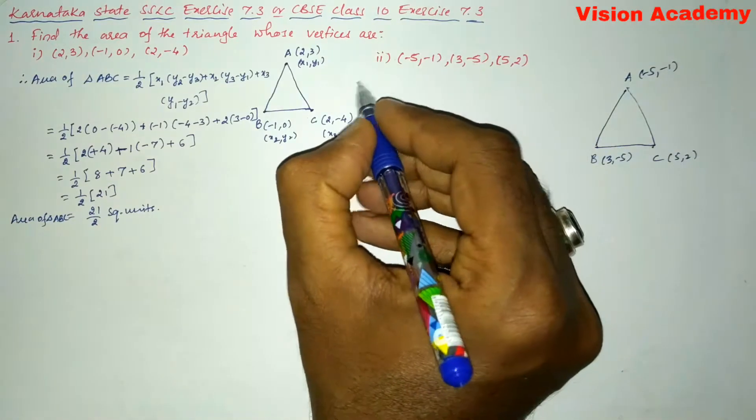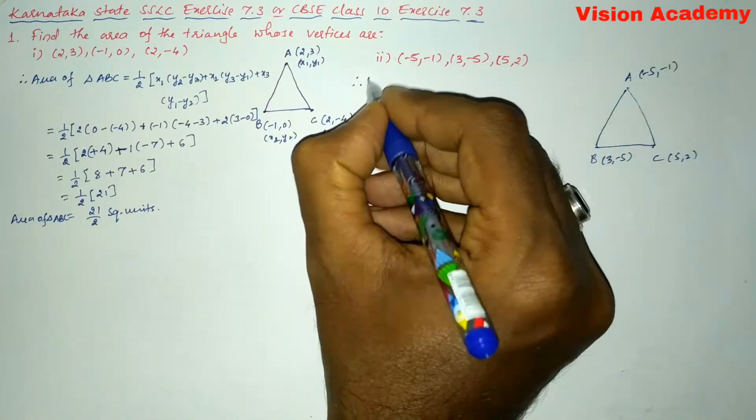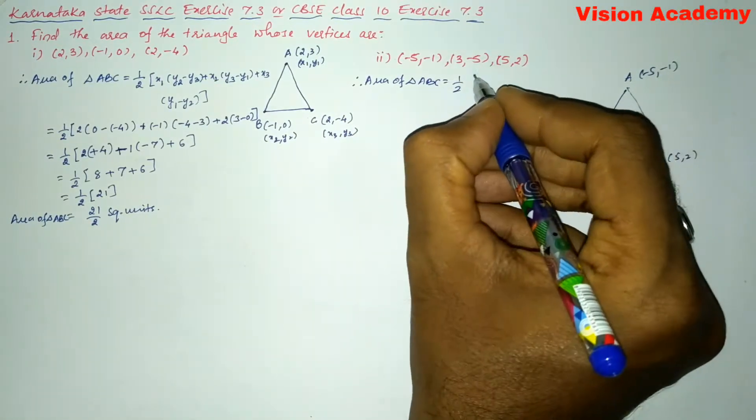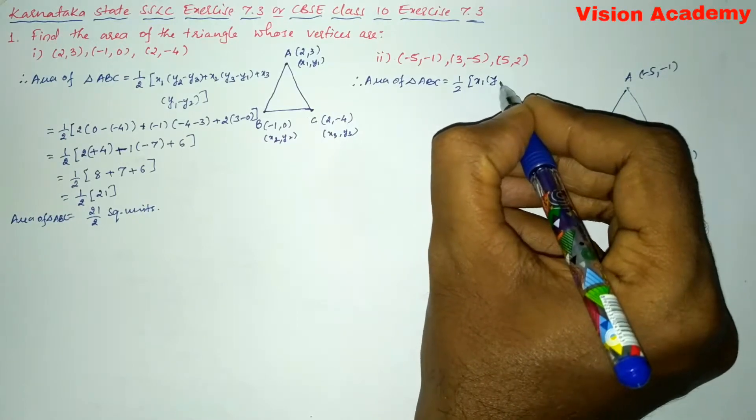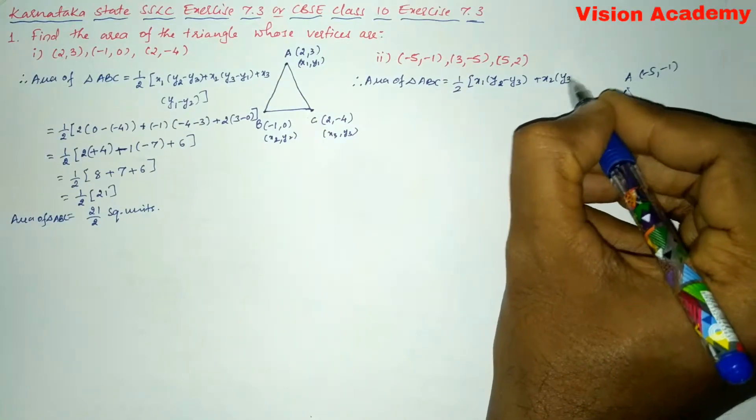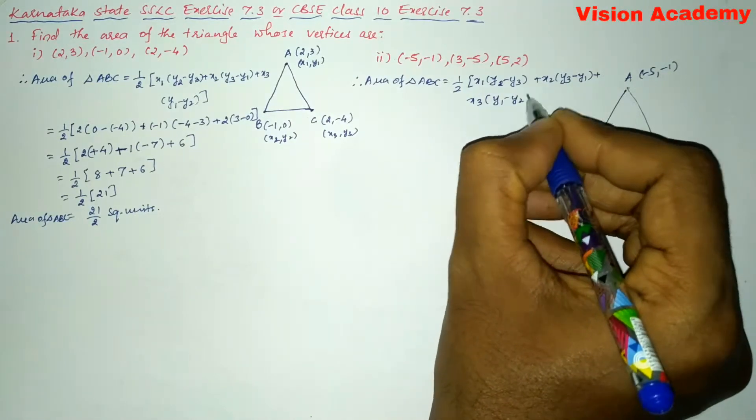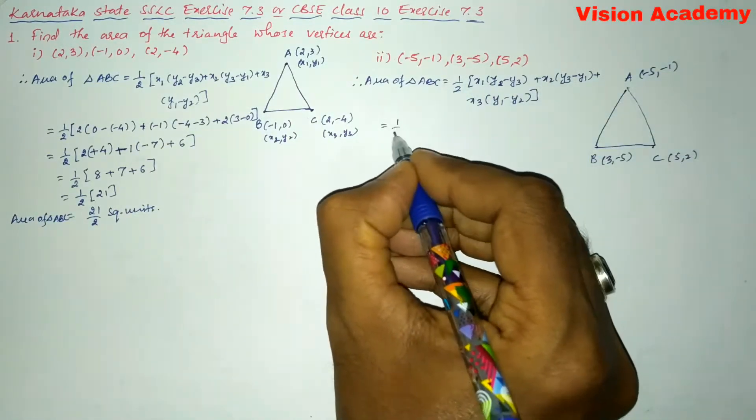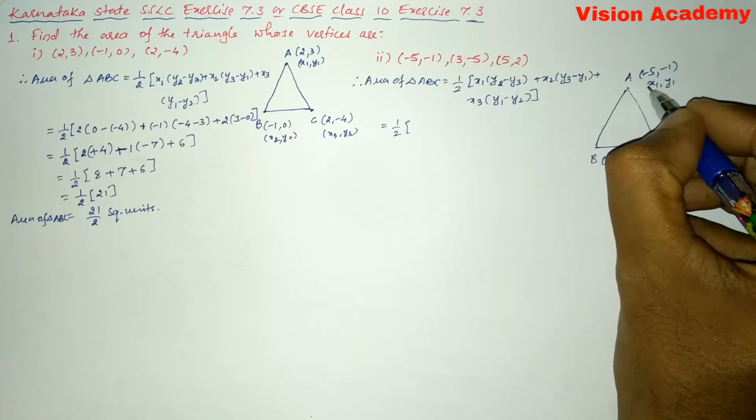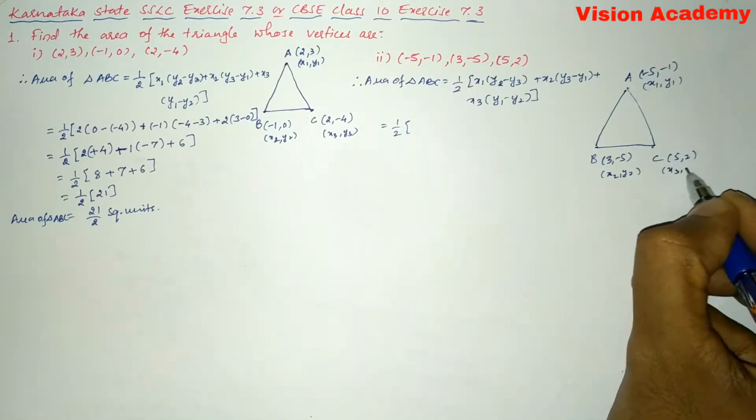Now we know how to find area of a triangle when the coordinates are given. So therefore we can write area of triangle ABC is equal to 1/2 into [x1(y2-y3) + x2(y3-y1) + x3(y1-y2)]. Now let us substitute, where this one is x1,y1 and this one is x2,y2 and this is x3,y3.